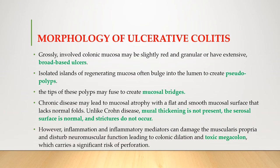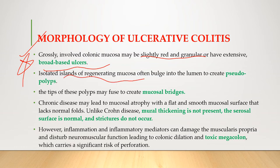Regarding the morphology of ulcerative colitis, the colonic mucosa may be slightly red and glandular with extensive broad-based ulcers — different from the serpentine ulcers of Crohn's disease. Isolated islands of regenerating mucosa often bulge into the lumen to create pseudopolyps, whose tips may fuse to create mucosal bridges.